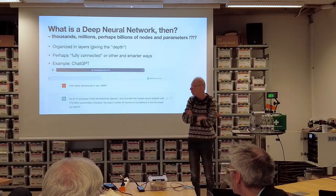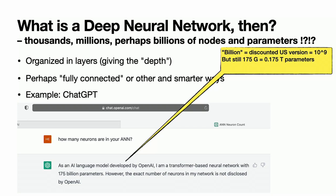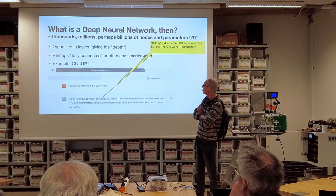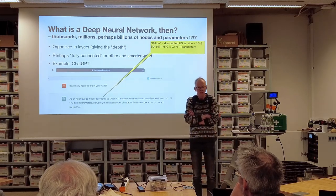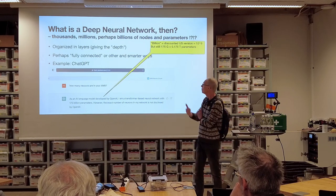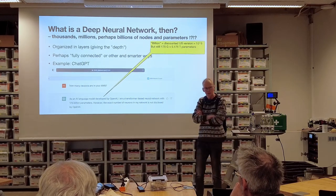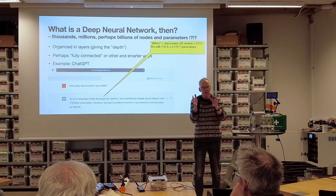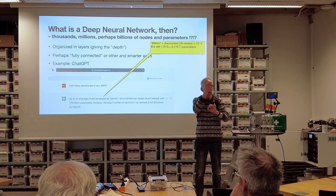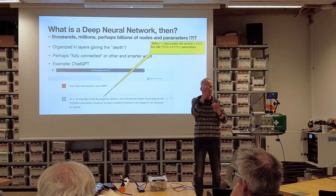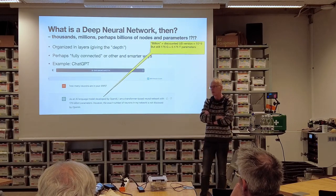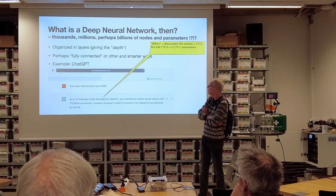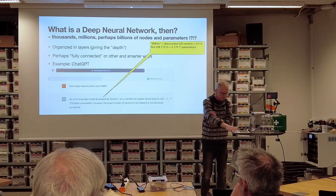An example of a deep network is ChatGPT. I was asking it how many neurons it has - it wouldn't tell me. But it told me how many parameters. All these small weighted sums can be adjusted a little bit, and then you can have it perform whatever you want if you have a good training algorithm. But this is really an insane amount of parameters.